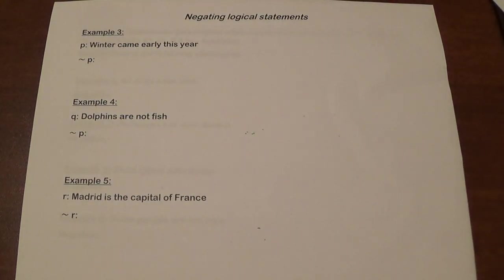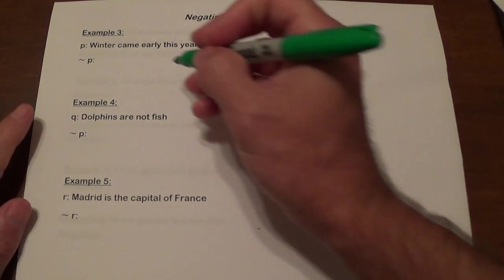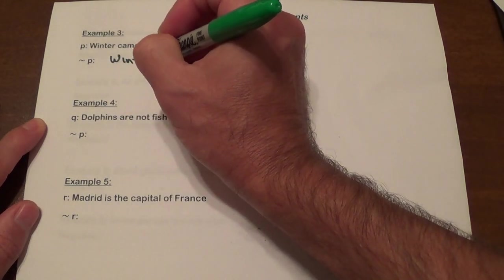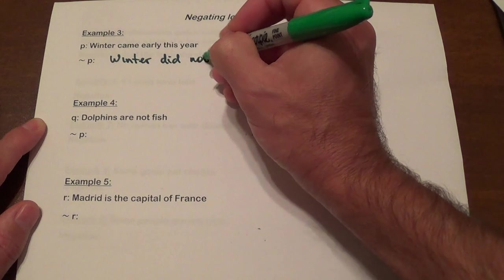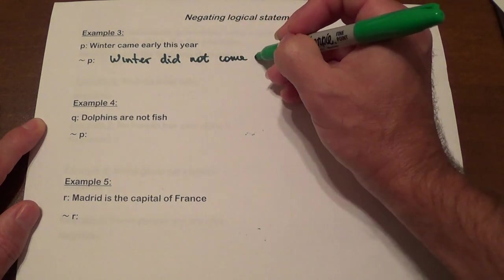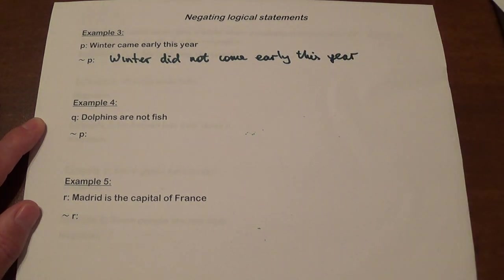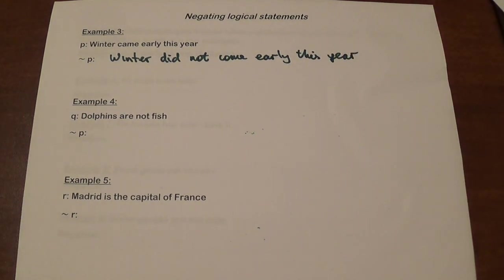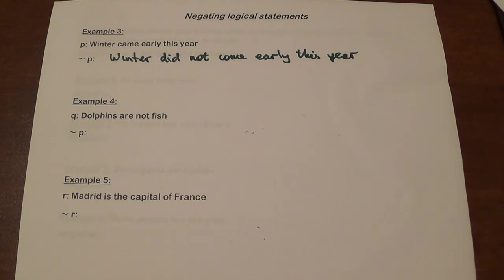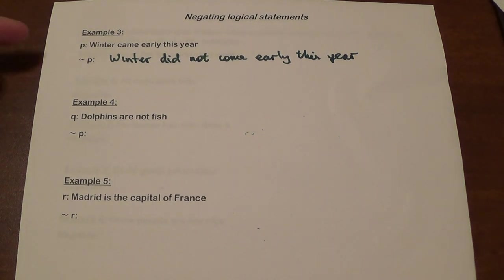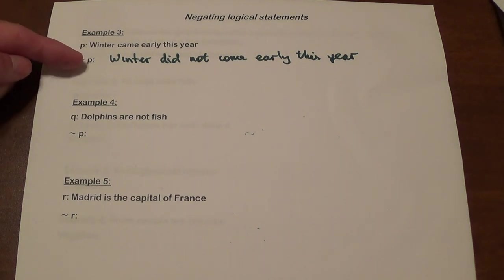So: winter came early this year. This is our statement P. So not P will be: winter did not come early this year. We're not analyzing whether a statement is true or false — we just take the statement and negate it, changing its truth value to the opposite. For example, if it's a true statement that winter indeed came early this year, then the negated statement would be false.